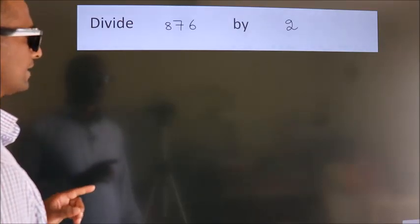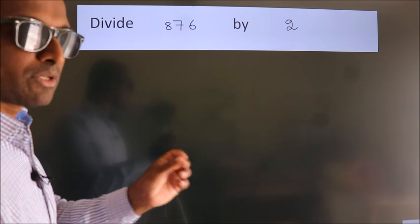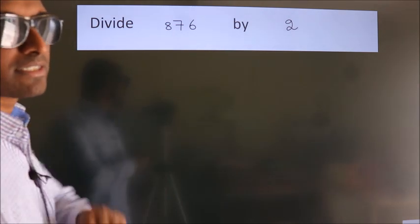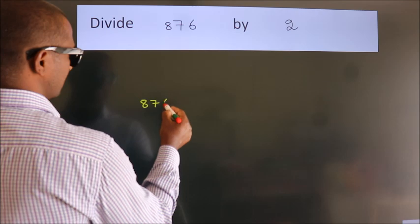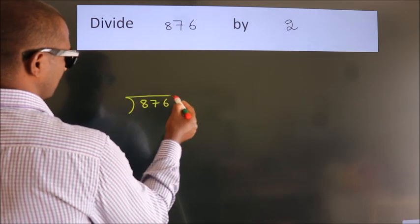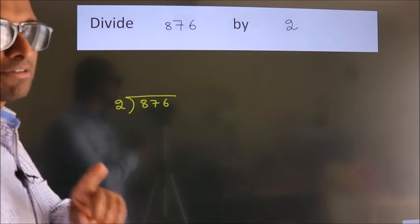Divide 876 by 2. To do this division, we should frame it in this way: 876 here, 2 here. This is your step 1.